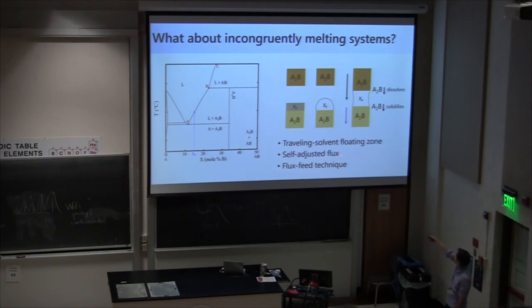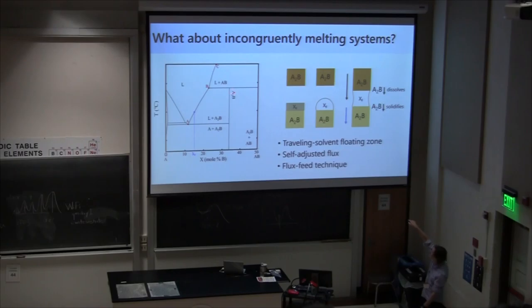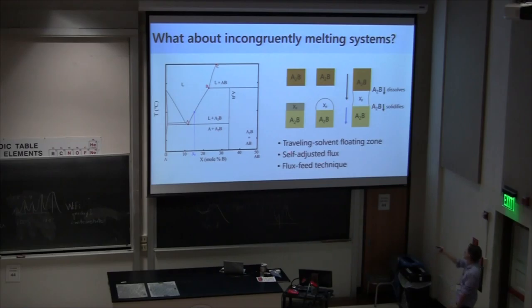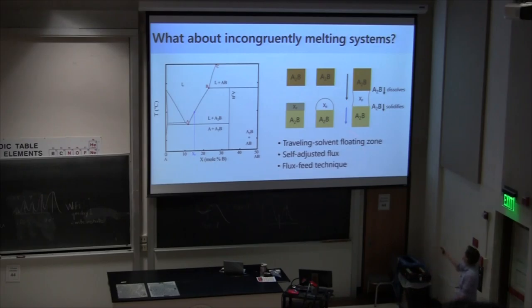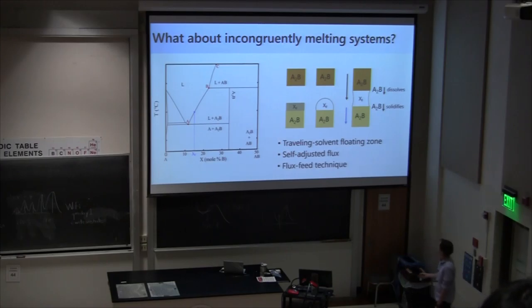Other ways of dealing with incongruent melting: people also do a so-called self-adjusted flux technique — I think this is more or less people who succeed by accident. You start somewhere off-stoichiometry, and just by expelling A2B out of the melt, you eventually hit the peritectic line and get some region of your crystal that actually works. Another way is the flux feeding technique, where you incorporate the flux into the feed rod itself — as you grow, you introduce additional flux into the melt, which can also compensate for losses during growth if it's a volatile material. Incongruently melting materials are accessible with floating zone techniques.